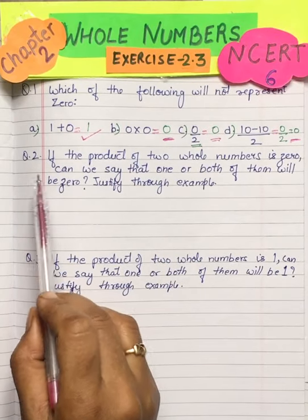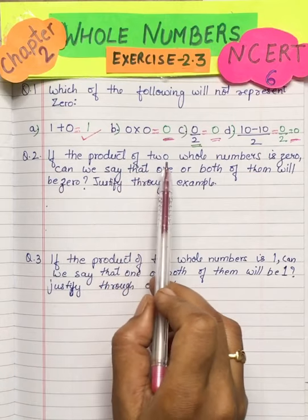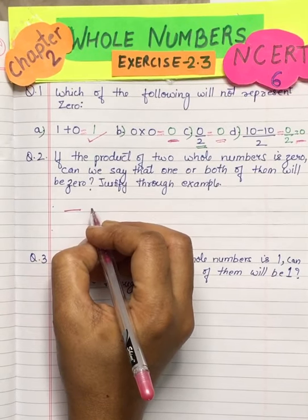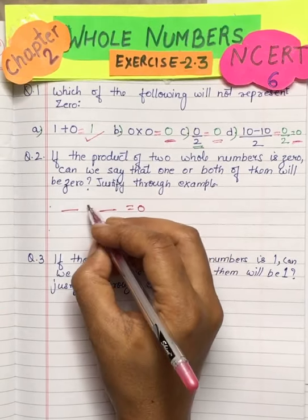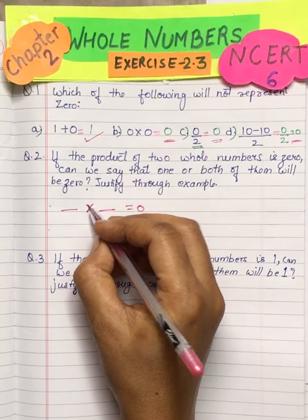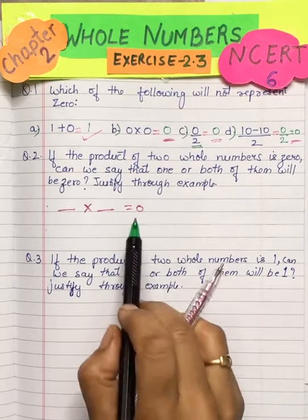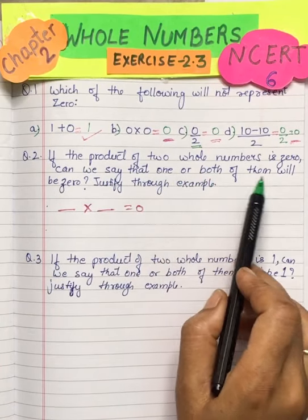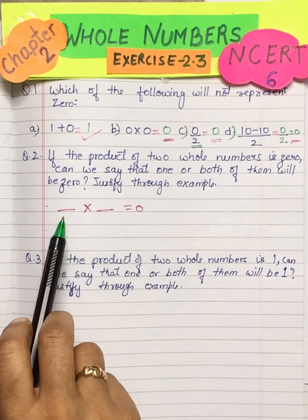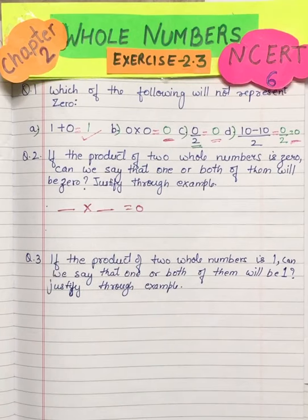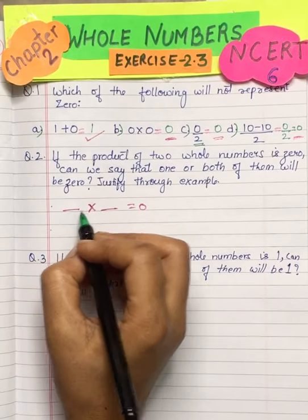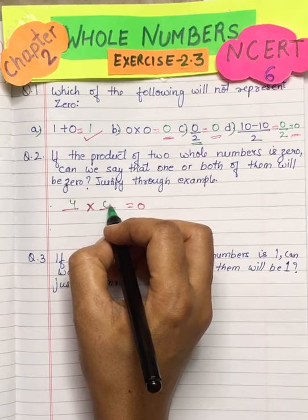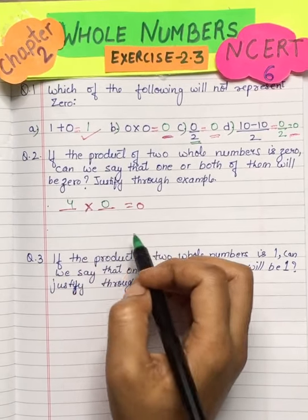Now let's do the second question. If the product of two whole numbers is 0, means if we multiply two whole numbers and get 0, then can we say that one or both of them will be 0? We need to check this. Now let's suppose one is 4 and this is 0. 4 into 0 is 0.